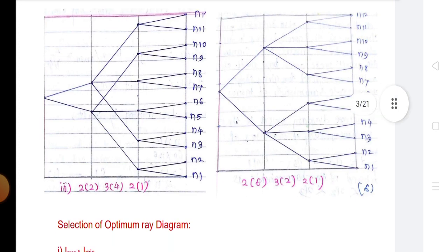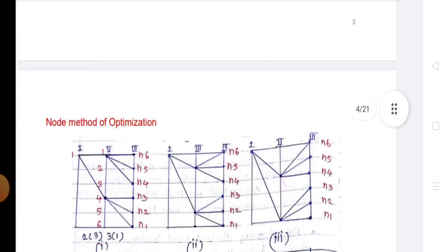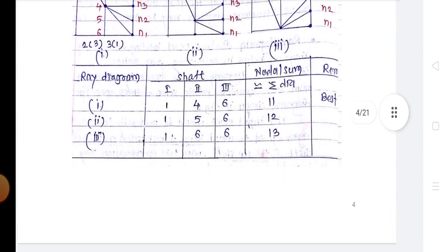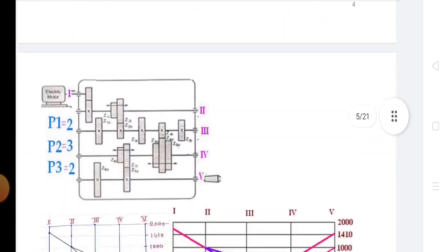Now we discuss about the speed diagram, also called the ray diagram. The structure diagram we discussed already shows transmission flow in a gearbox, but it does not provide information related to the individual speeds of each gear and number of teeth on each gear.